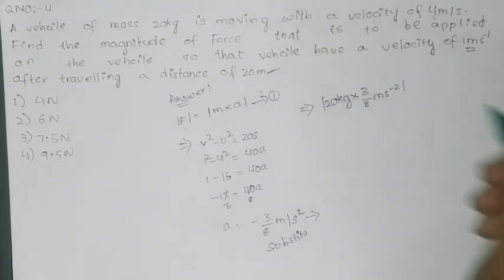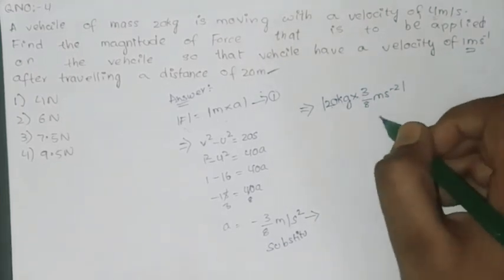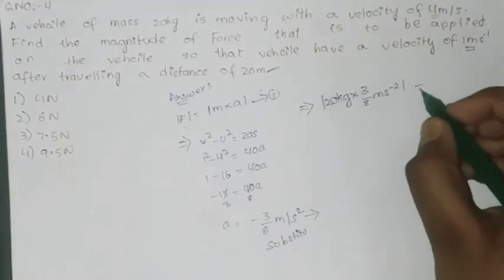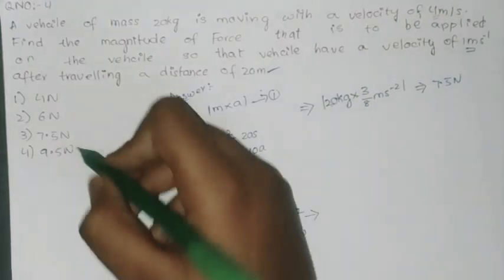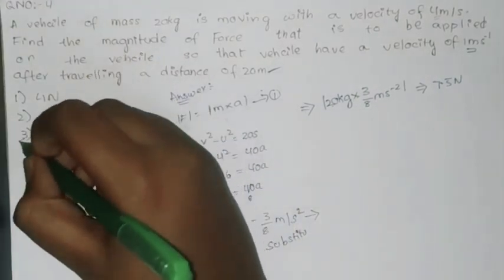20 times 3, how much? 2 threes are 60 by 8. We will get 7.5 newtons. Option 3. That's it.